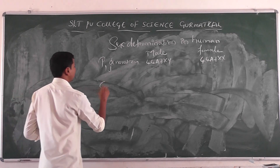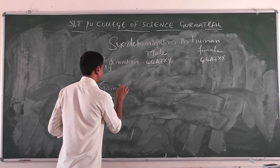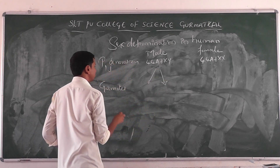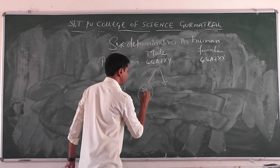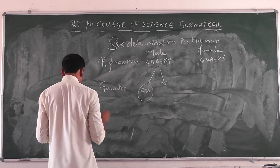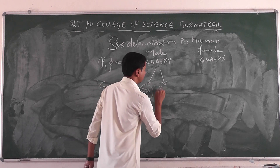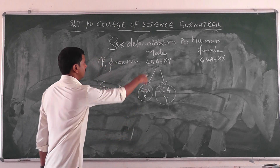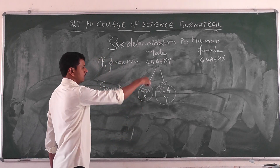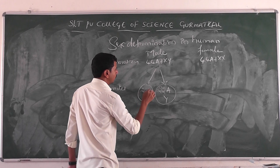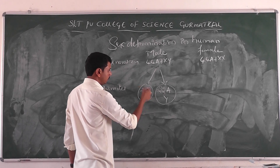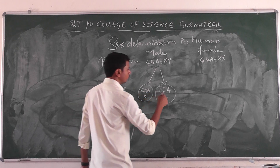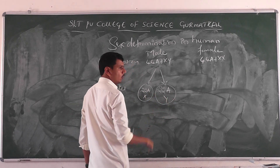Now the gametes — the gametes will undergo the meiotic process. In the male, this will produce gametes with 22 autosomes with the X chromosome, and other gametes with 22 autosomes with the Y chromosome.